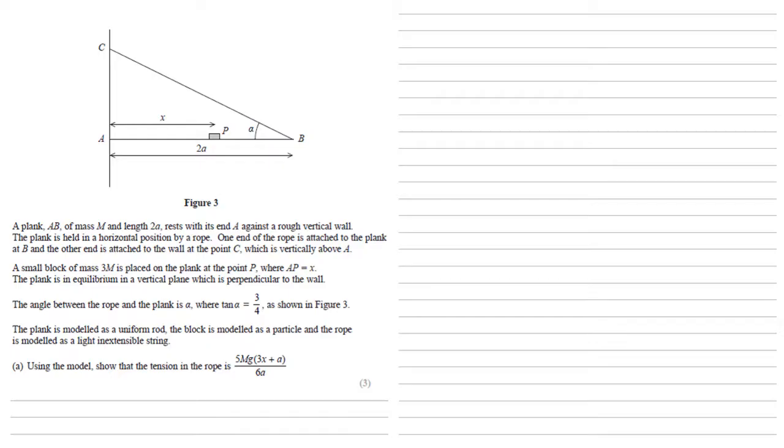A plank AB of mass M and length 2A rests with its end A against a rough vertical wall. The plank is held in a horizontal position by a rope. One end of the rope is attached to the plank at B and the other end is attached to the wall at the point C, which is vertically above A. A small block of mass 3M is placed on the plank at the point P, where AP equals X. The plank is in equilibrium in a vertical plane which is perpendicular to the wall.